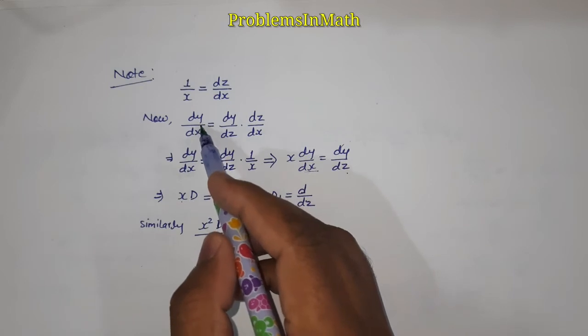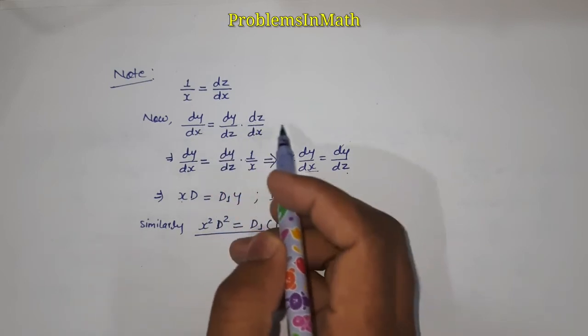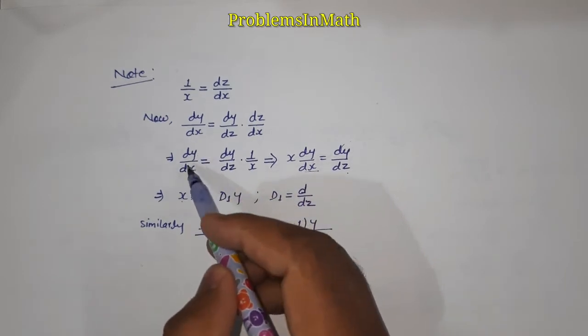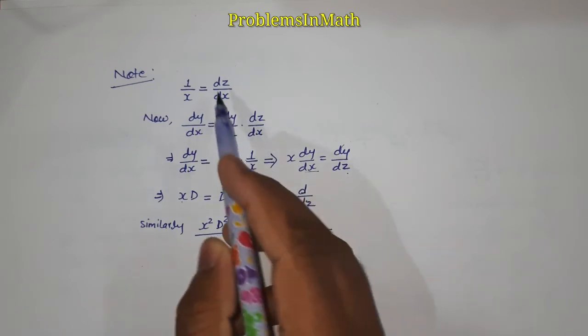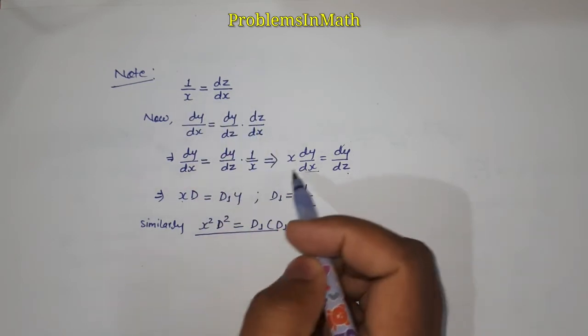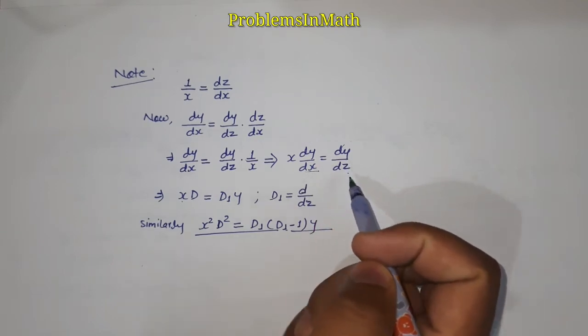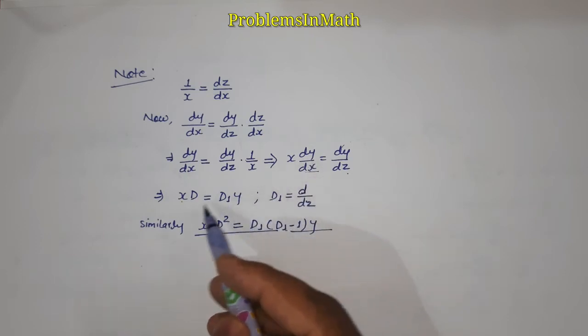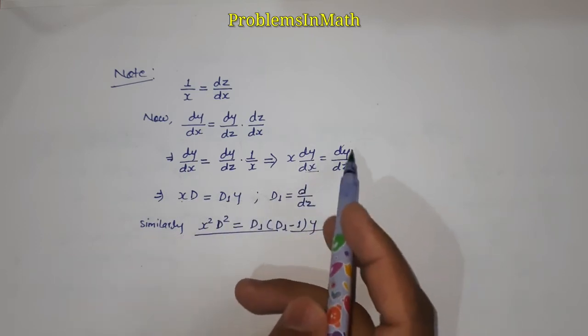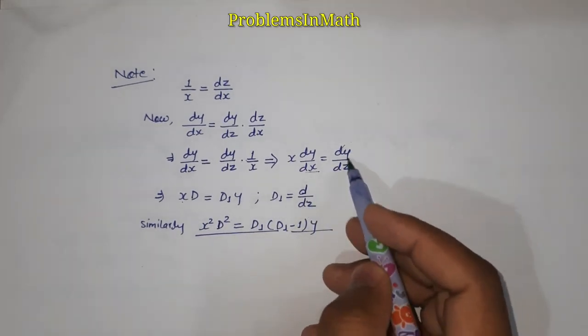Now since dy over dx equal to dy over dz into dz over dx by the chain rule, we get dy over dx equal to dy over dz times 1 upon x. By cross multiplication we get x dy over dx equal to dy over dz. Since the derivative is denoted by capital D, hence xD is equal to D1 y, and D1 is equal to d over dz.